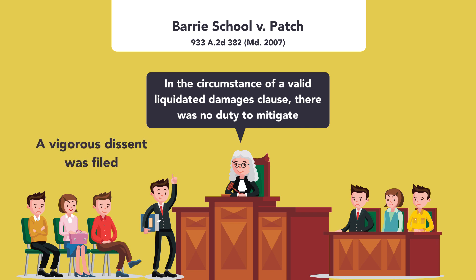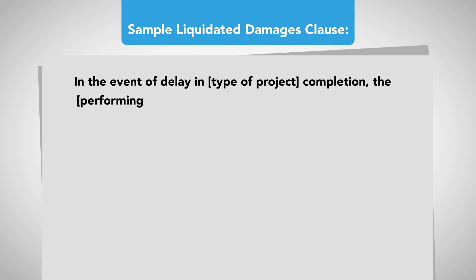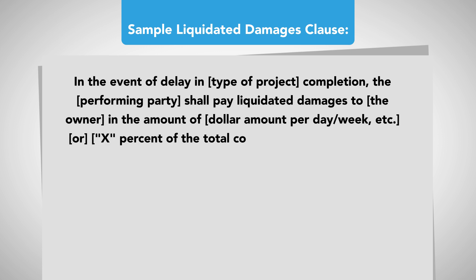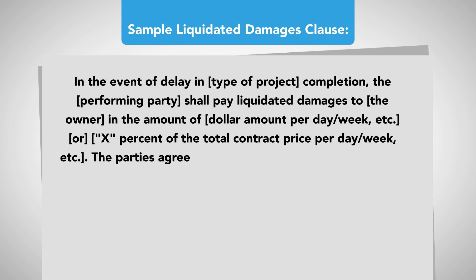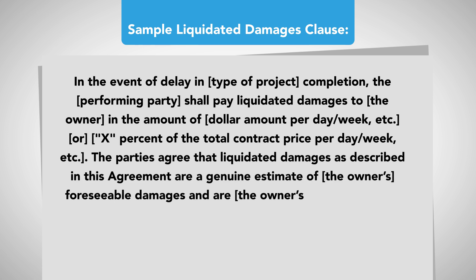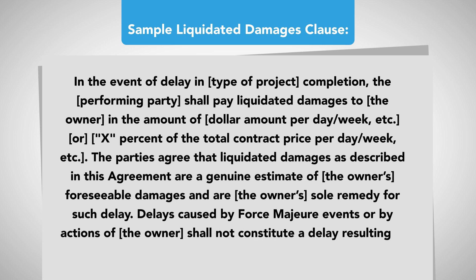A vigorous dissent was filed. Sample Liquidated Damages Clause: In the event of delay in type of project completion, the performing party shall pay liquidated damages to the owner in the amount of dollar amount per day, week, etc., or x percent of the total contract price per day, week, etc. The parties agree that liquidated damages as described in this agreement are a genuine estimate of the owner's foreseeable damages and are the owner's sole remedy for such delay. Delays caused by force majeure events or by actions of the owner shall not constitute a delay resulting in the payment of liquidated damages.